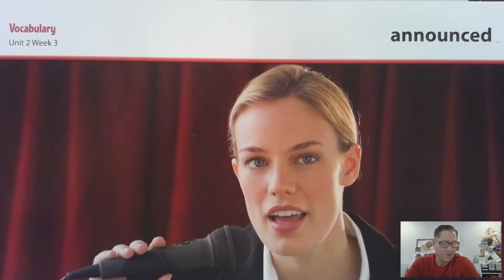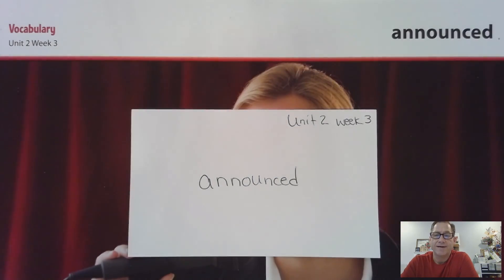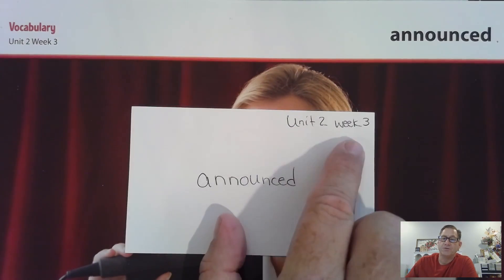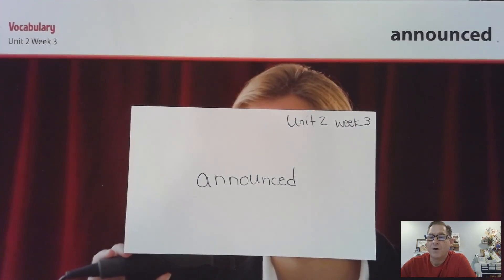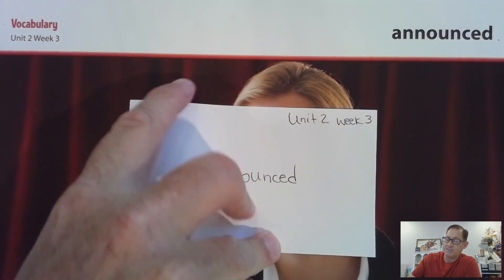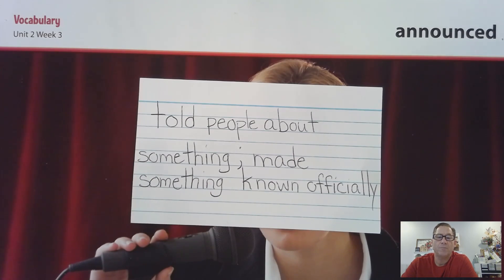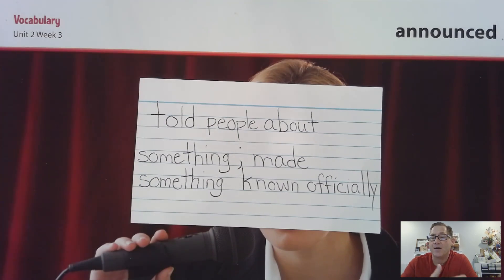When has someone announced your name? On one side of your card, let's write Announced, Unit 2, Week 3. Pause the video as you need to write the definitions. On the other side of the card, write: told people about something or made something known officially, as in they announced the results of the election.